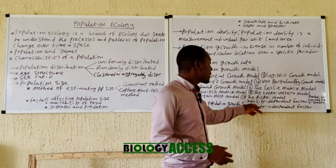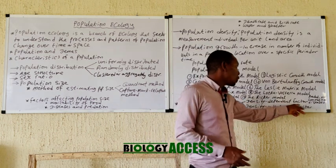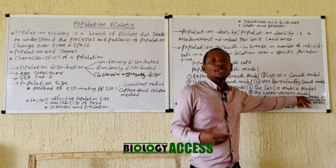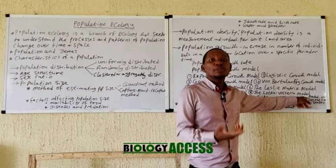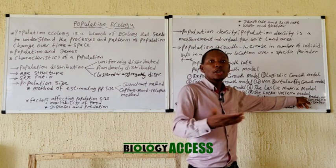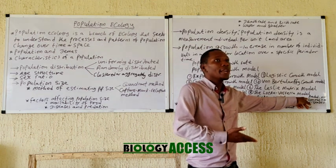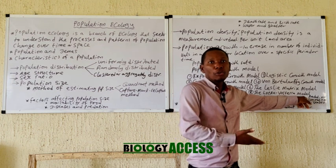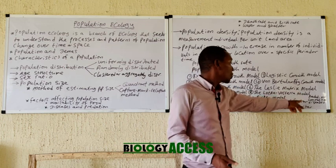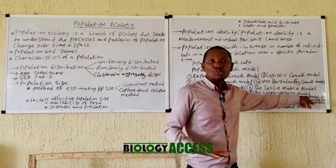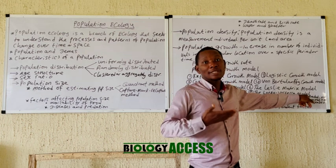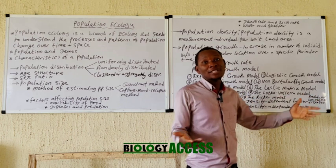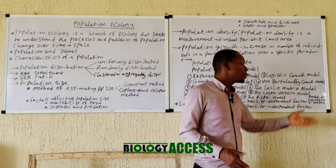To summarize density-dependent factors: predation — when the population is large, organisms become easy prey for carnivores. Competition becomes more intense with increasing population size. Diseases spread faster when the population is large and compact. These are the key density-dependent limiting factors.